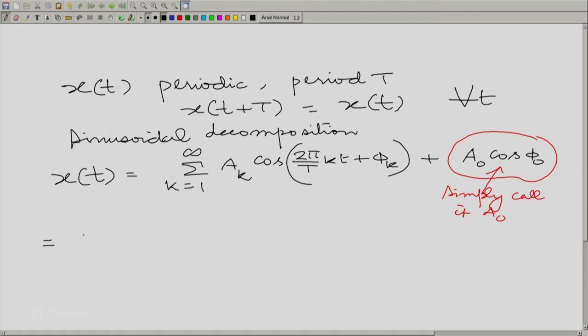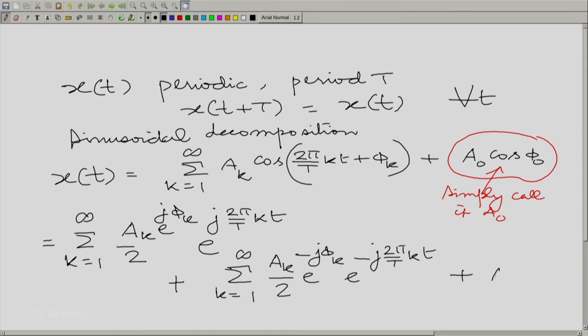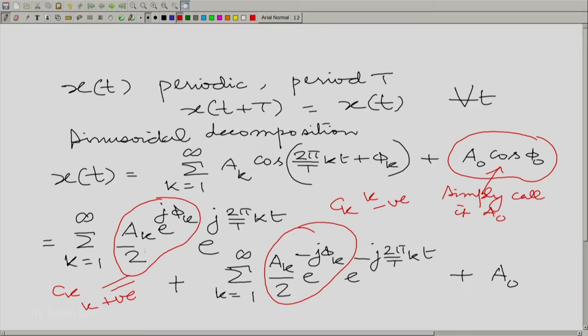This can now be decomposed. You have summation k going from 1 to infinity, a_k by 2, e raise to the power j phi_k, e raise to the power j 2 pi by T, k t plus. Same thing, but with a conjugation and then plus a_0. Notice that this is equal to c_k for k positive and this is equal to c_k for k negative. And notice that for k positive and k negative, the corresponding k positive and k negative, you have complex conjugates.